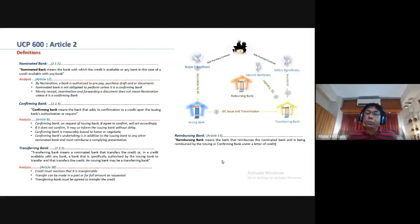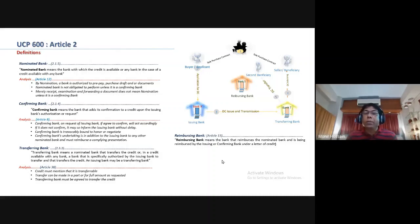Whenever the reimbursing bank receives a fund from the issuing bank — that is, Mutual Trust Bank Trade Services Division — it will credit it to the account of Barclays Bank, and the reimbursement role will be played. So, reimbursing bank means that bank which performs this function.